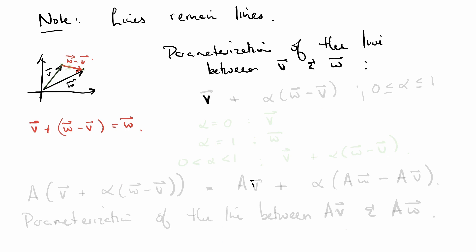V plus alpha W minus V, where alpha is some real number between zero and one. Let's explore why this might be true. When alpha is equal to zero, what do we get? We just get V. We get this point right here. When alpha is one, we've got V minus V. We get W. That's this point right here. And when alpha is strictly in between zero and one, what we get is V plus some scaling of W minus V, which is some point in between.